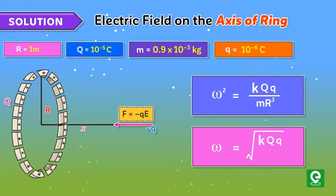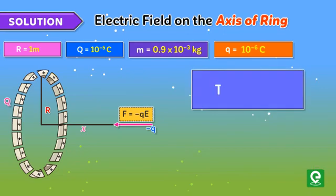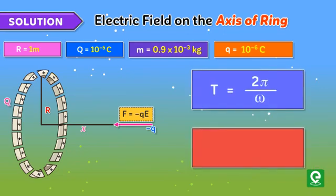We know that time period T = 2π/ω. On substituting the value of ω, we get time period T = 2π√(mR³/kQq).